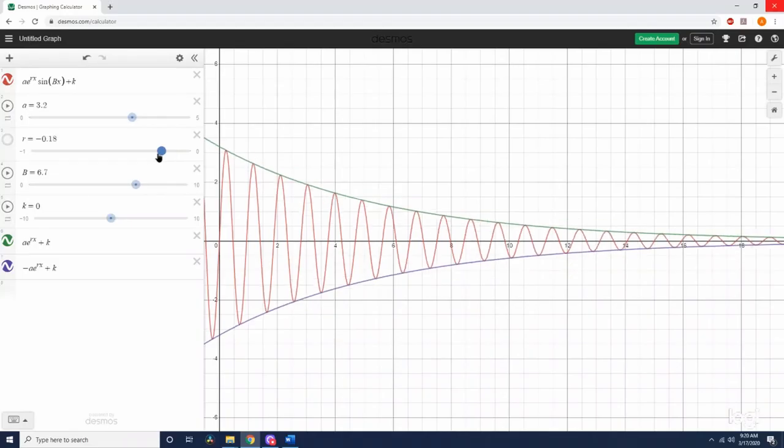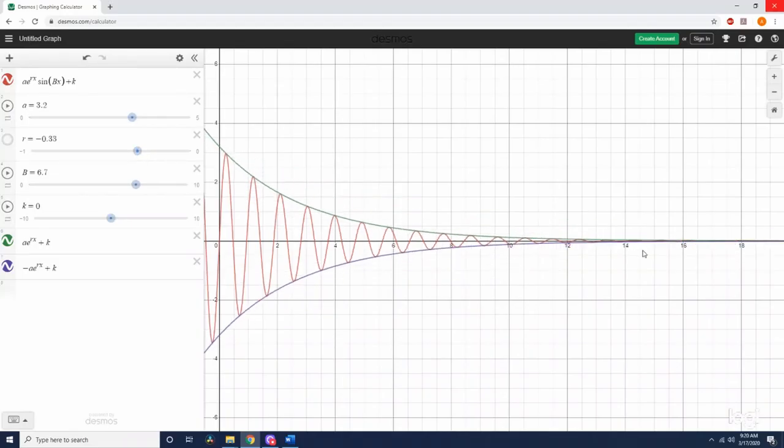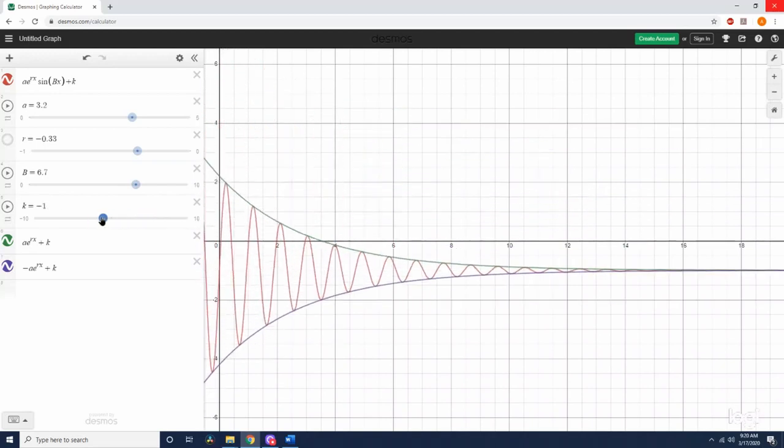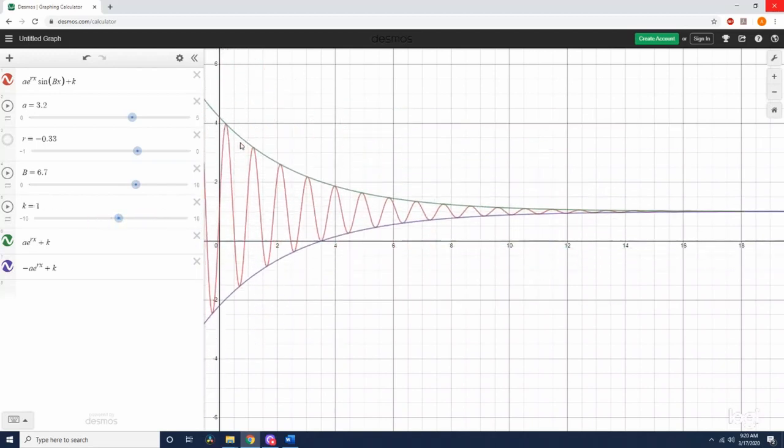If we make it decay faster, then it shrinks down faster. And you can see eventually, it essentially stops moving down here. The midline can still go up and down and everything moves together. But the important thing here is that this exponential decay part controls the size of the oscillations.